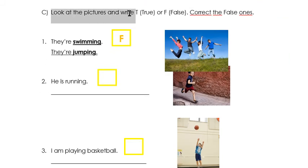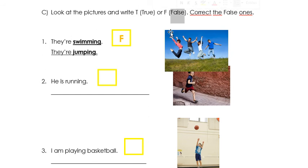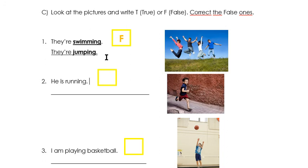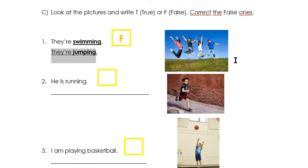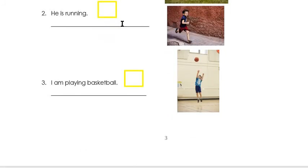In Activity C, you have to look at the pictures and write true or false. And you have to correct the false ones. For example: 'They are swimming' — están nadando ellos? No — false. So what are they doing? They are jumping. Están saltando. Si es verdadero no tienen que hacer nada, solamente ponen la T.